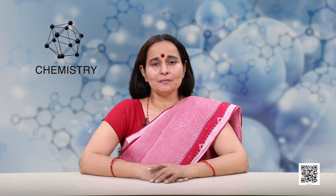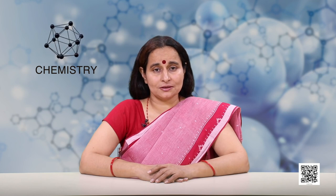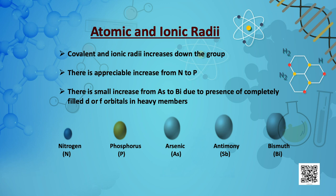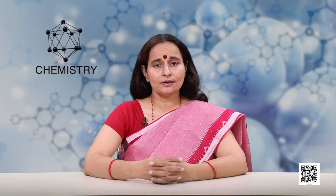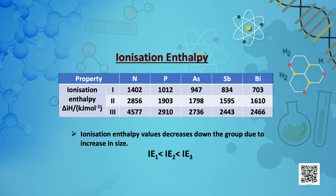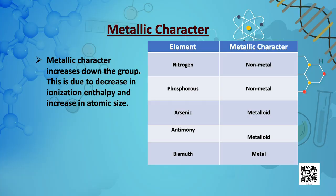All the members of this family tend to follow a general trend in properties. Covalent radius increases down the group, but only a small increase is observed from arsenic to bismuth, due to the presence of completely filled d and/or f orbitals in heavier members. There is a decrease in ionization enthalpy down the group, as atomic size increases and effective nuclear charge decreases. Metallic character increases down the group due to decrease in ionization enthalpy and increase in atomic size. Nitrogen and phosphorus are non-metals, arsenic and antimony are metalloids, and bismuth is a metal.